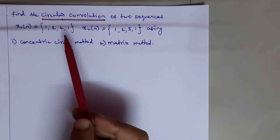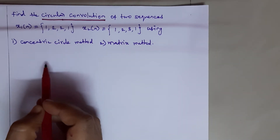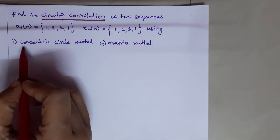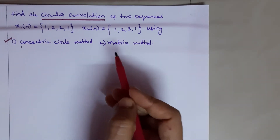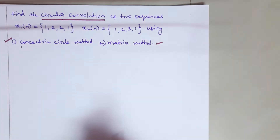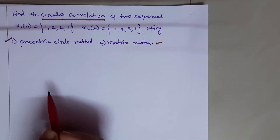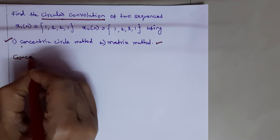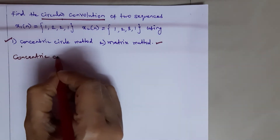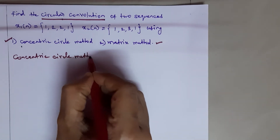There are many methods to perform circular convolution. Here we will use two methods: the concentric circle method and the matrix method. In any method, we will get the same answer. First, we are going to perform the concentric circle method.